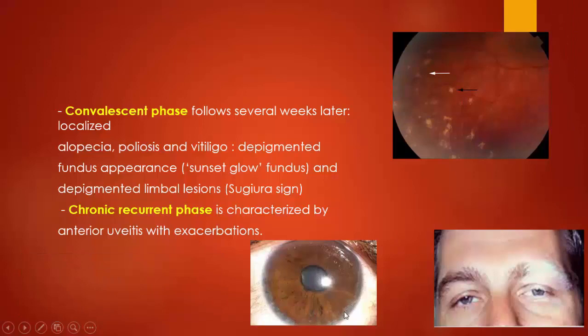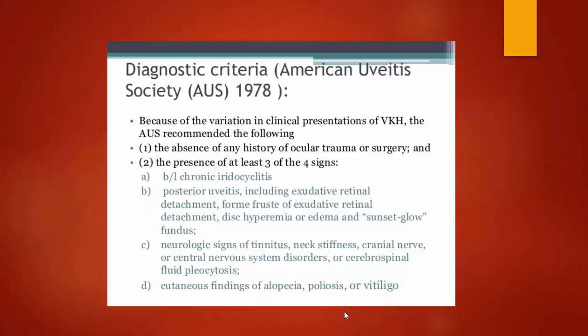Diagnostic criteria by the American Uveitis Society for VKH include: first, absence of any history of ocular trauma or surgery. Second, presence of at least three of four signs including chronic iridocyclitis, posterior uveitis with exudative retinal detachment, disc hyperemia or edema, or sunset glow fundus. Third, neurological signs of tinnitus, neck stiffness, or cranial nerve palsies. And lastly, cutaneous findings including alopecia, poliosis, and vitiligo.